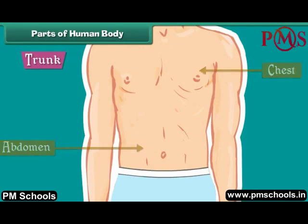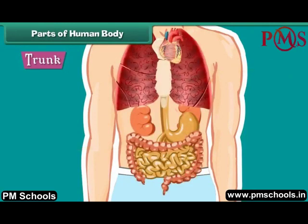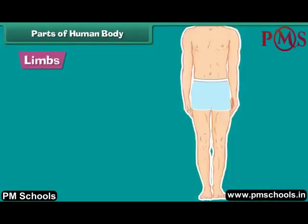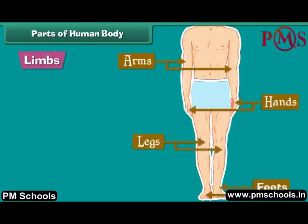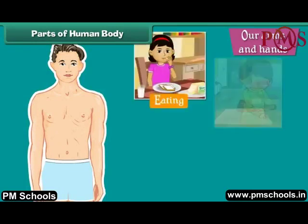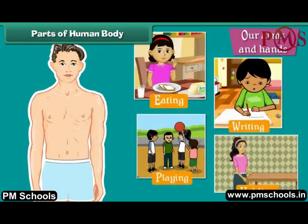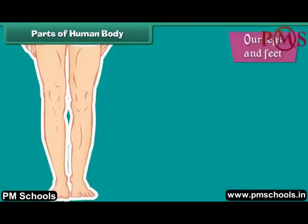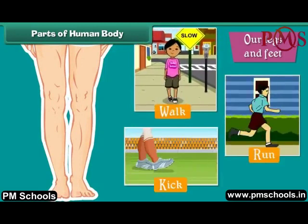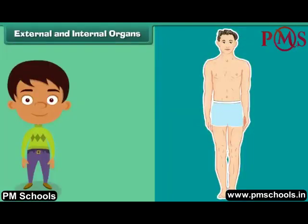Many important organs such as the heart, lungs, stomach, intestines and kidneys are located inside the trunk. Limbs consist of a pair of arms, hands, legs and feet. Our arms and hands assist us in eating, writing, playing, holding and lifting things. Our legs and feet help us to walk, run, kick and dance.